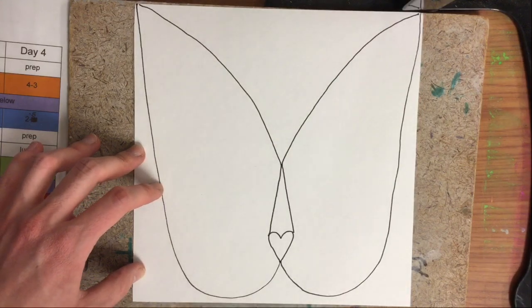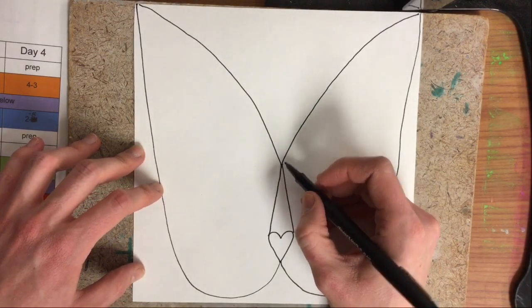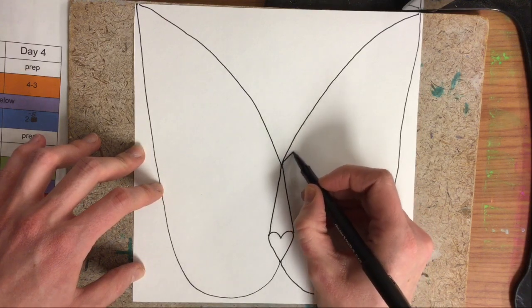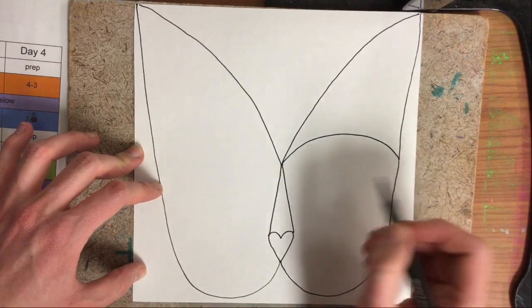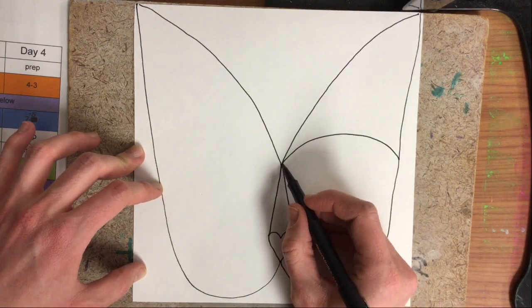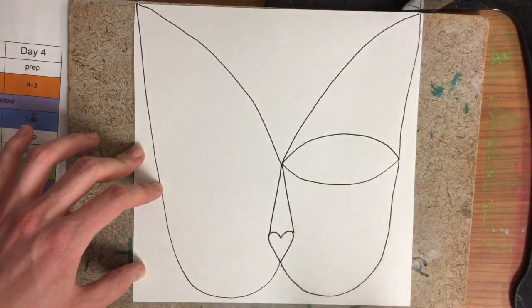Last we're going to add our cat's eyes. Starting once again at the top of that triangle point, we're going to make a big curve, kind of like a rainbow, from one side of the face to the other, and the same on the bottom from one side to the other. Nice big cat eyes.